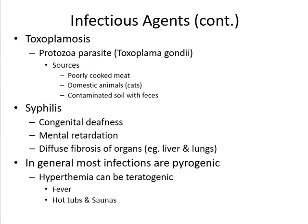Continuing with infectious agents: toxoplasma and syphilis may lead to congenital deafness, mental retardation, and diffuse fibrosis of organs such as the lungs and liver. In general, most infections are pyrogenic, so hyperthermia itself can be teratogenic through fever, hot tubs, and saunas.